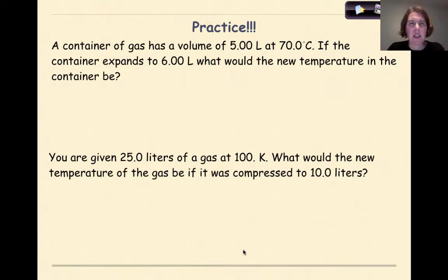Welcome back. Let's see how you did. A container of a gas has a volume of 5 liters at 70 degrees Celsius. If the container expands to 6 liters, what would the new temperature in the container be? So again, the first thing I'm going to do is convert this from 70 degrees Celsius by adding 273 into Kelvin, and if I do that, my answer will be 343 Kelvin. Then I'm going to set up my formula. V1 over T1 is equal to V2 over T2. Where my initial volume is 5 liters, and I found that that was 343 Kelvin.